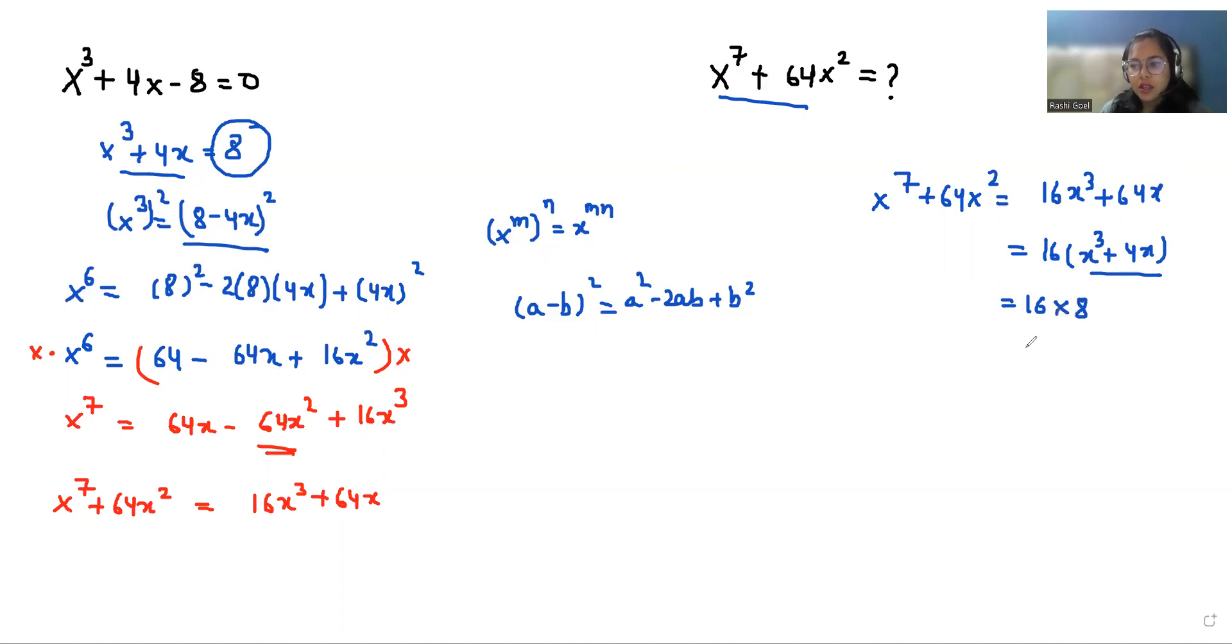So 16 times 8 is 128. Therefore, the final value of x⁷ + 64x² is 128. I hope it's clear and you find it useful. Please give a thumbs up and subscribe to my channel. Stay tuned.